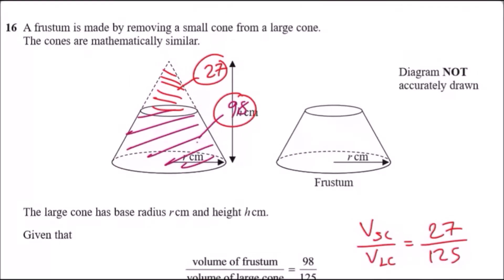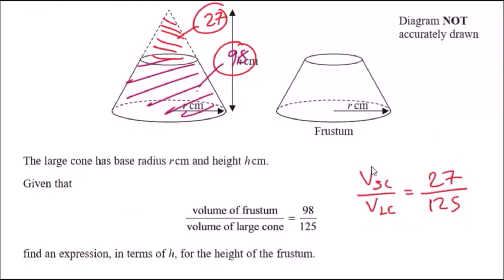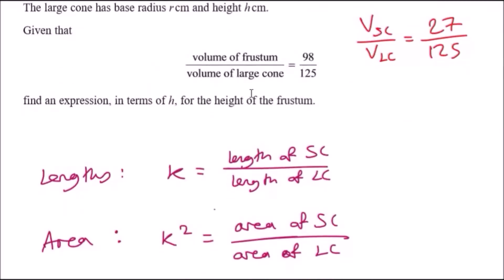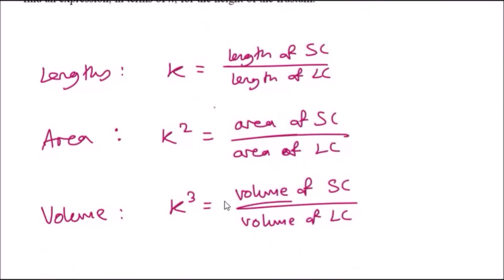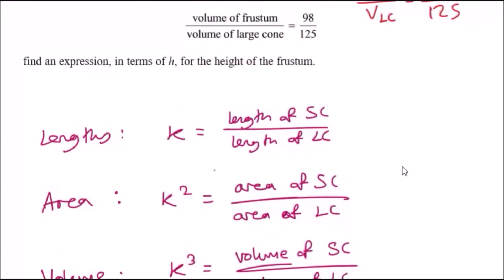When you work with mathematically similar things, the scale factors are all related. When you work on lengths, the ratio between the small cone and large cone is represented by k. This means the areas between them is k², and the volume between them is k³. The k values are all the same, the only difference are the powers.